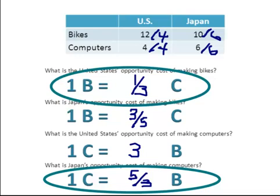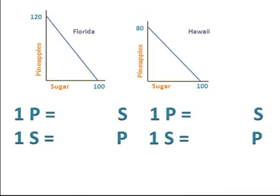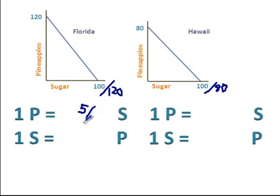You won't always see opportunity cost or comparative advantage given to you in a neat little table like this. Sometimes you're going to have to look at graphs and do the same thing, but it really works exactly the same way. You would divide the amount of sugar that each nation produces by the number of pineapples that each nation produces to find the opportunity cost of producing one pineapple. For Florida the opportunity cost of producing one pineapple is five-sixths of a sugar, and for Hawaii it would be five-fourths of a sugar.